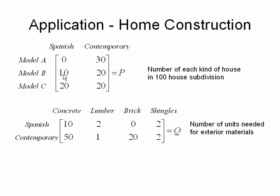For instance, in the second row first column, there are going to be 10 houses that are Model B and Spanish type. If I go to the third row second column, the 20 there tells me there will be 20 Model C's with contemporary styling.